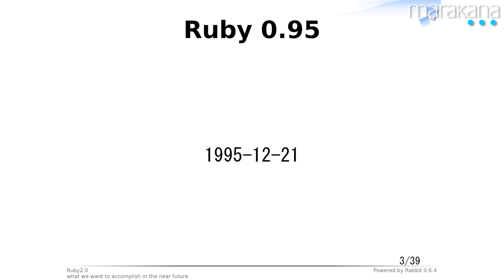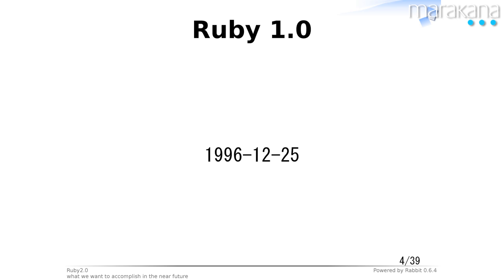The first released version of Ruby is Ruby 0.95. When the project started, I began with 0.00, 0.01, and increased the version numbers daily. I released it on December 21st, 1995. As a tradition, Ruby releases tend to be in the holiday season — December 21st. A year later, I released Ruby 1.0 as a Christmas present.